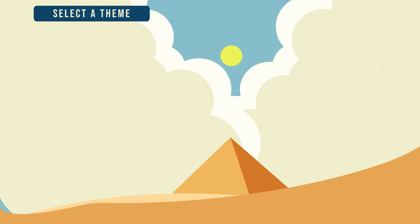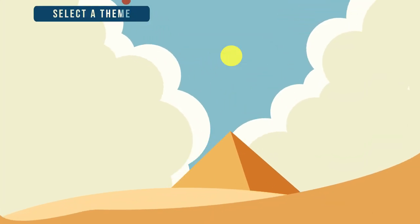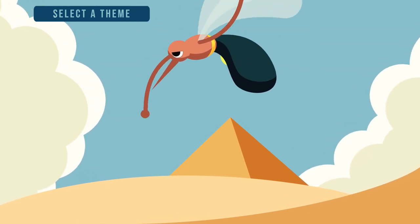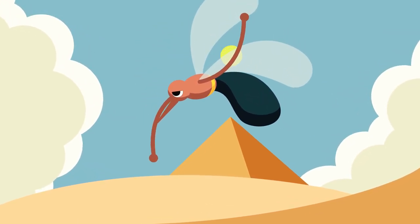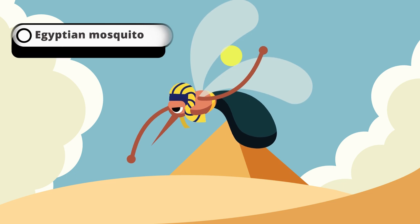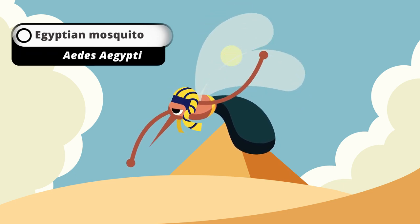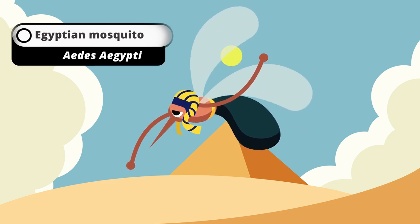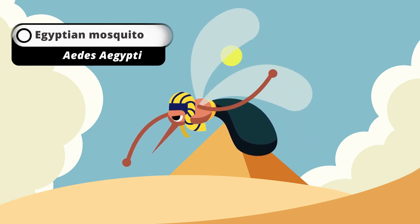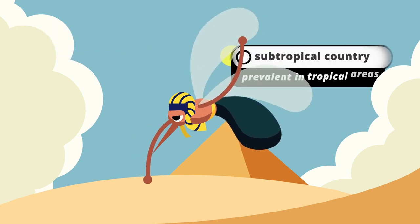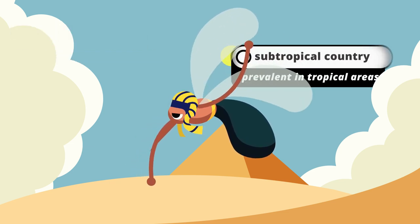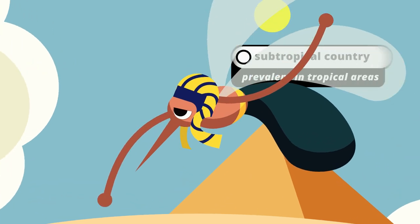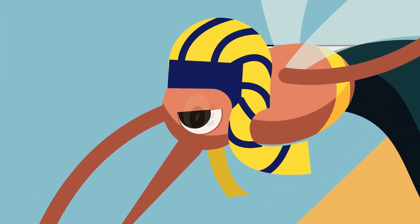Now let's start drawing the visual mnemonic. First, select a theme — my theme is ancient Egypt. The Aedes aegypti reminds me of an Egyptian mosquito, which helps me remember the name. And since Egypt is a subtropical country, I'll remember that dengue is prevalent in tropical areas.